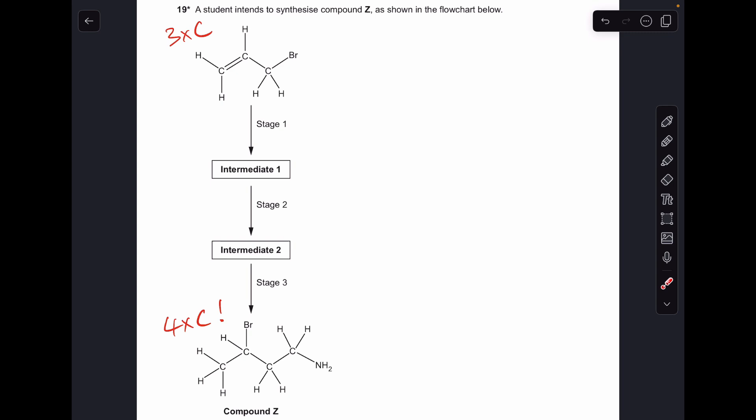The fundamental thing in this question is you start with something with three carbons in it and you finish with something with four carbons in it. So we've got to grow the carbon chain by one carbon, so we're going to need to involve the creation of the nitrile functional group.